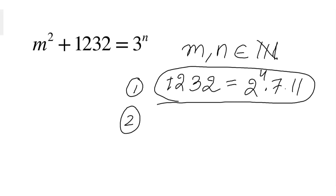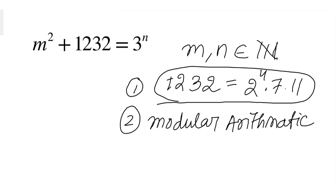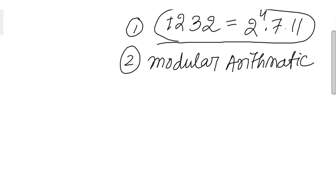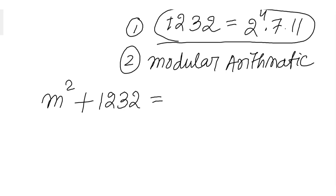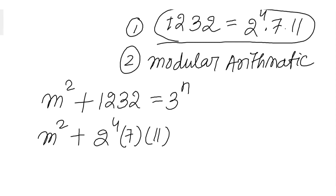Now let's start solving the question. We have m squared plus 1232 equals 3 to the power n. Writing 1232 in prime factorization: 2 to the power 4 times 7 times 11 equals 3 to the power n.